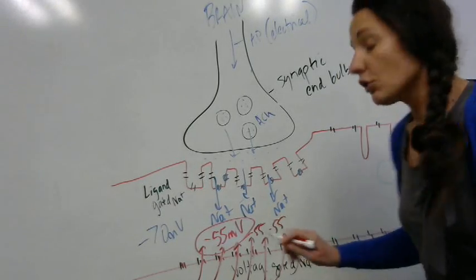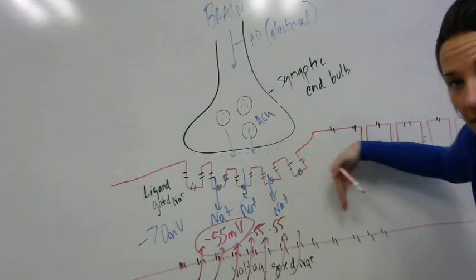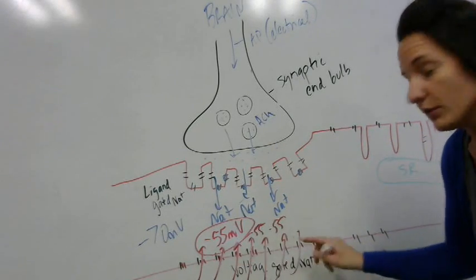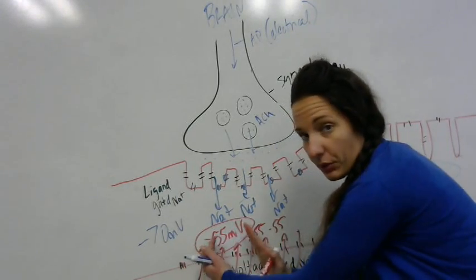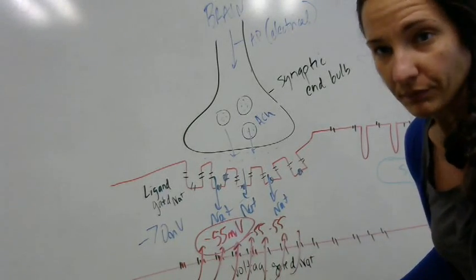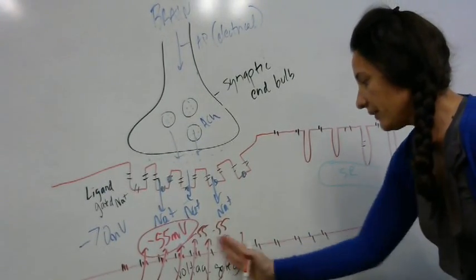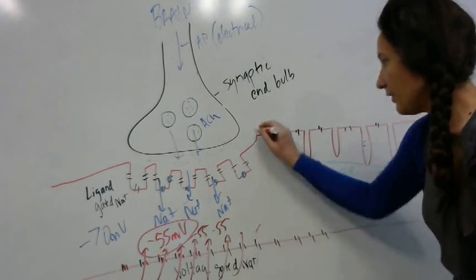What you find is that the voltage-gated channels allow for propagation. You can see this is going to allow for depolarization all the way down my cell. They allow for the movement or the propagation of this signal.